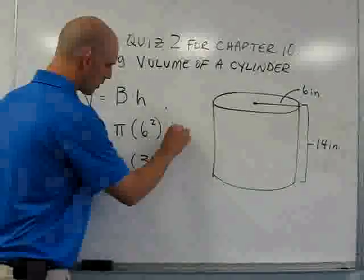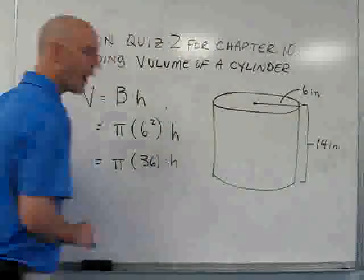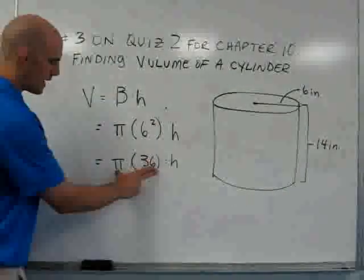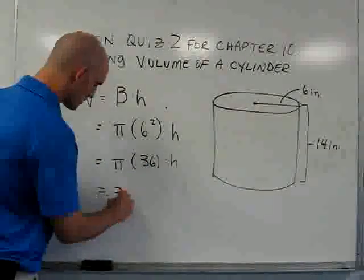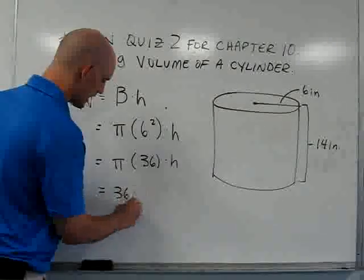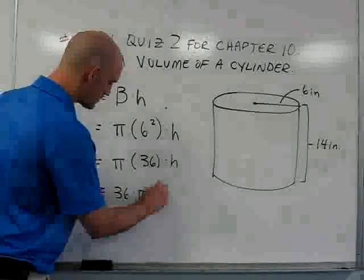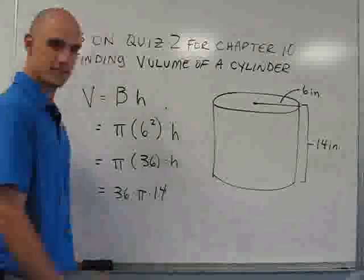Throughout this problem, we're continuing to multiply by the height. So, after we find the value for the base, we will multiply 36 times pi times the height, which is fourteen.